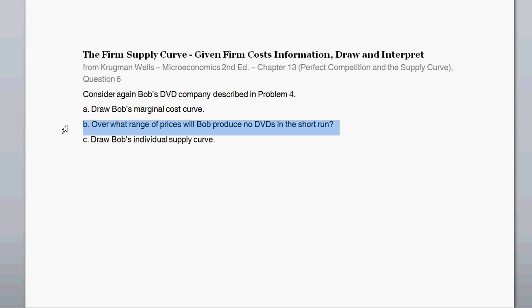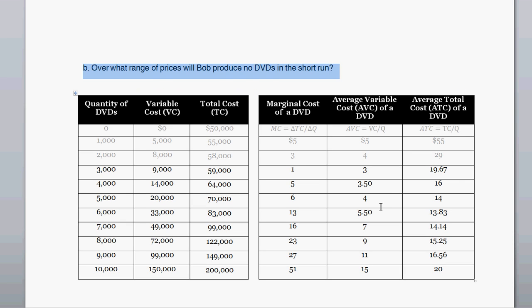Part B asks, over what range of prices will Bob produce no DVDs in the short run? We need to think about the shutdown price. So what's the shutdown price? Well, the shutdown price is the minimum average variable cost price. If you want to memorize something, the shutdown price is where average variable cost is at its minimum.